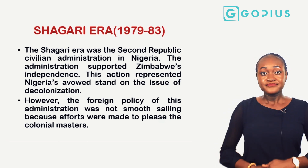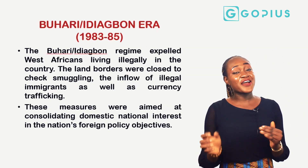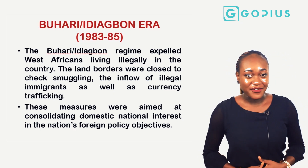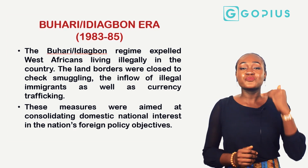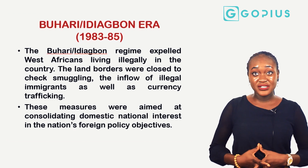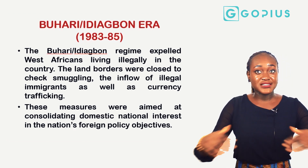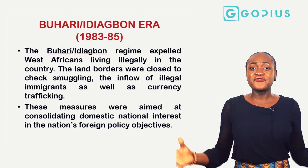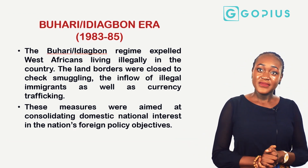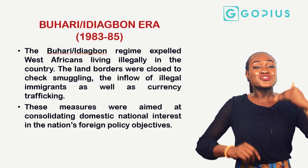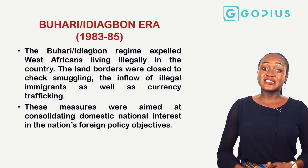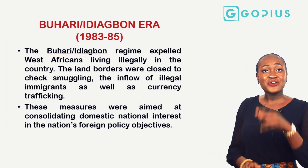The Buhari-Idiagbon era of 1983 to 1985 expelled West Africans who were living illegally in the country. Land borders were closed to check smuggling, the inflow of illegal immigrants, and currency trafficking. These measures were aimed at consolidating domestic national interest in the nation's foreign policy objectives.